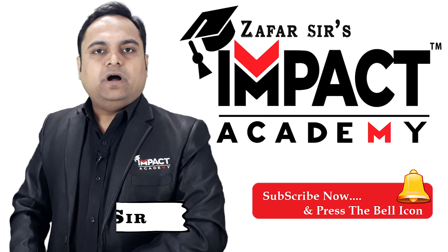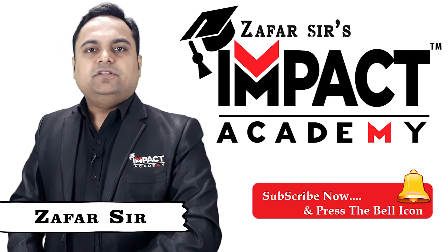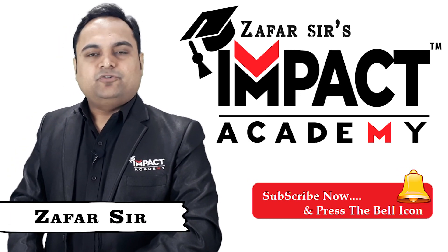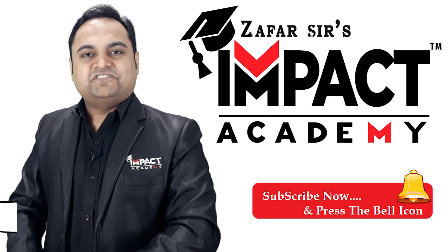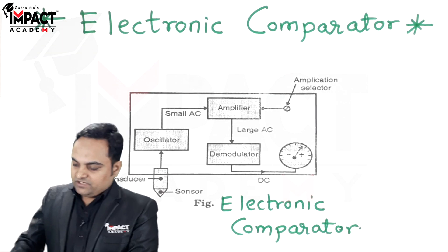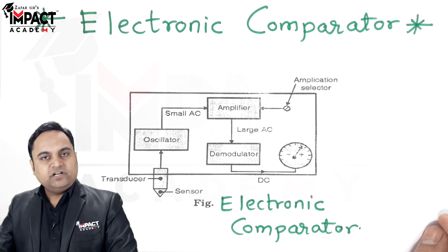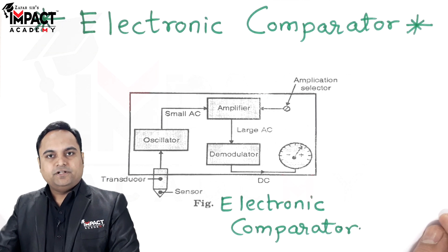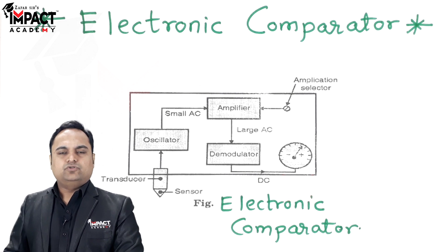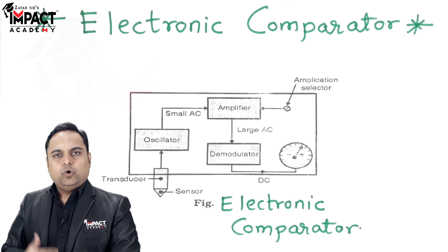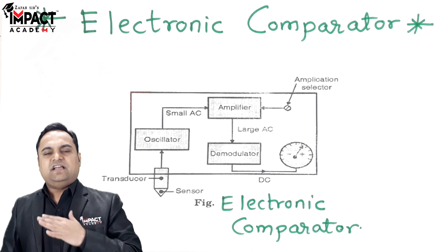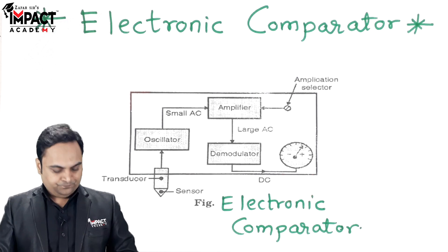Hi friends, here in this video I will be explaining the electronic comparator. Let's get started. Here is the diagram of the electronic comparator. Basically, this comparator is used to indicate whether a given surface is exactly flat or not.